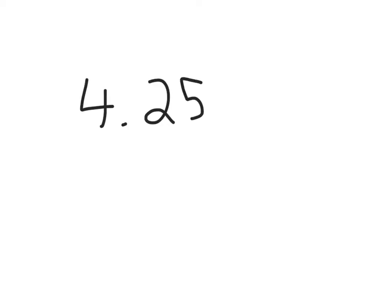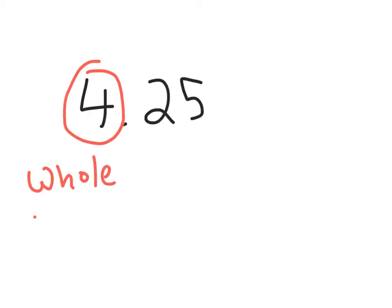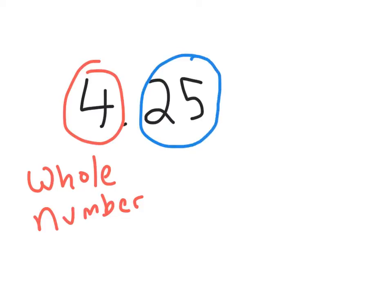When we are talking about decimals, we are talking about anything that happens after the whole number. So if we use 4.25 for example again, our 4 right here is our whole number, and our 0.25 right here — everything behind our decimal point — this is our decimal.